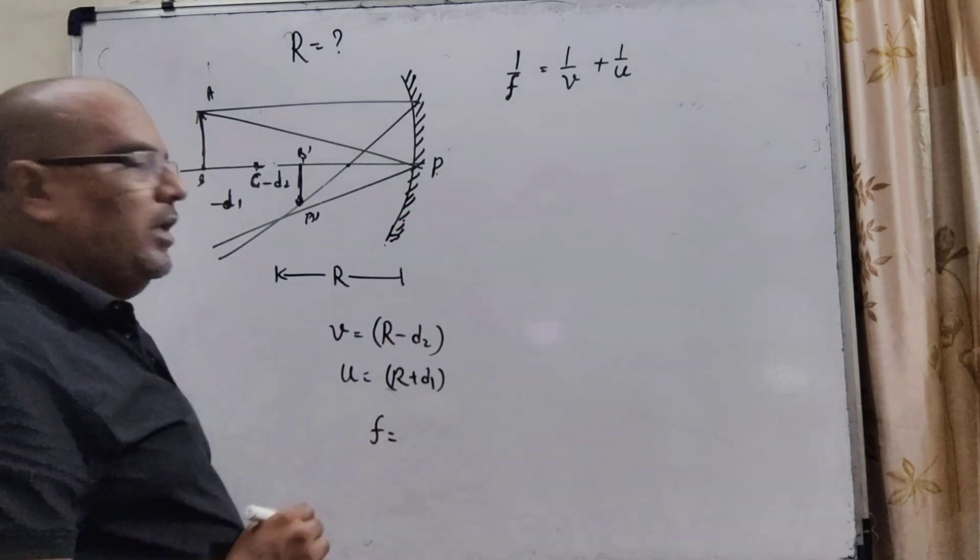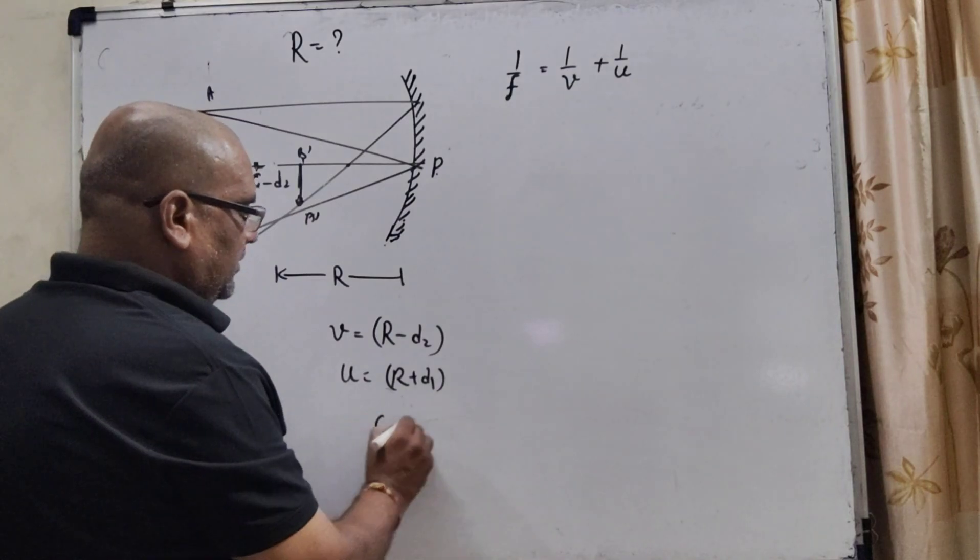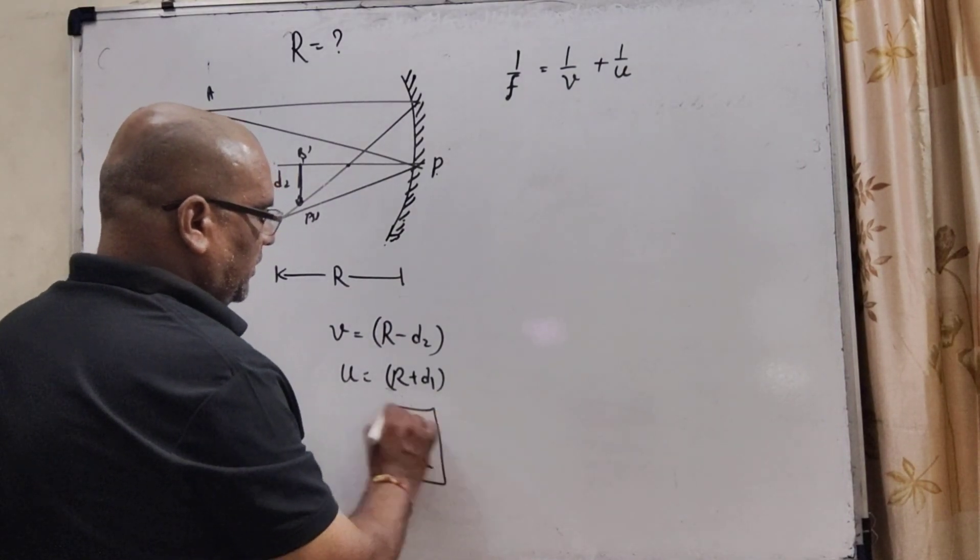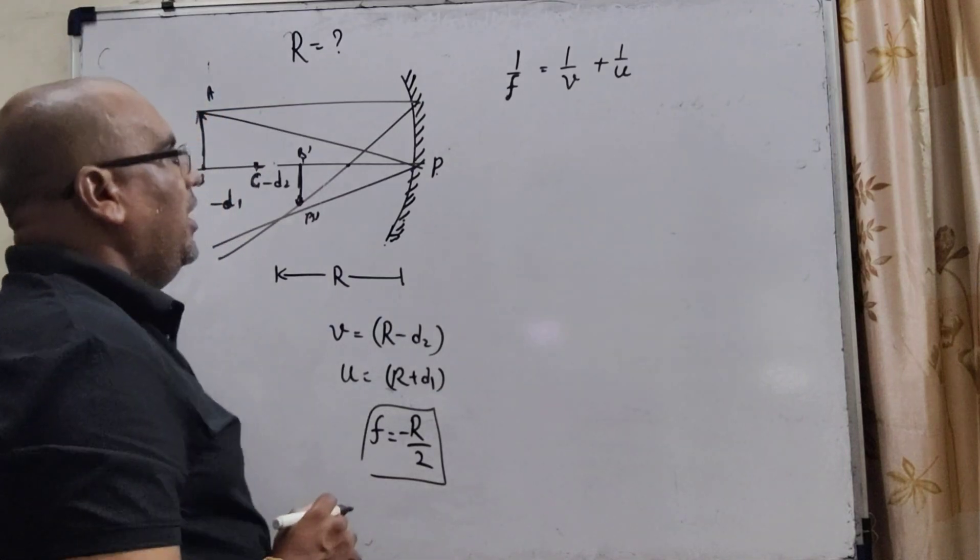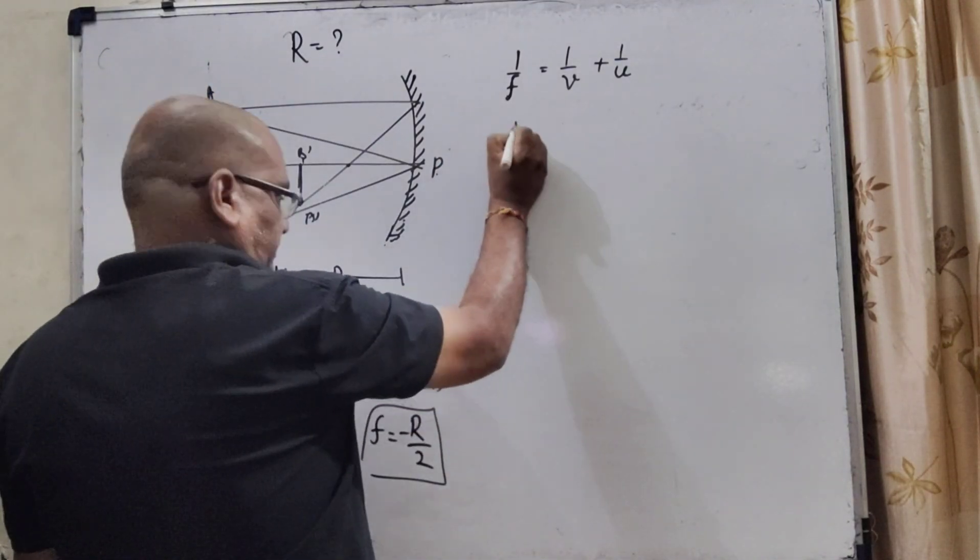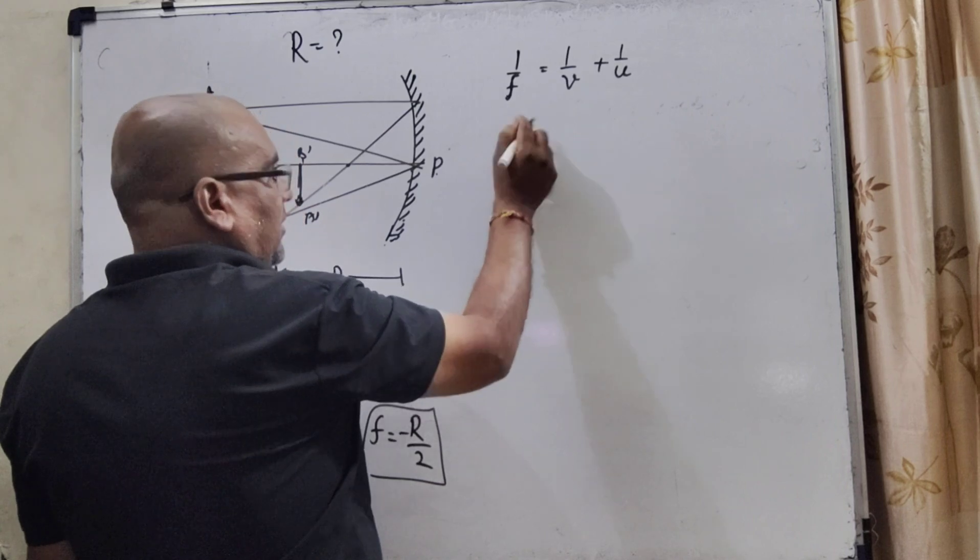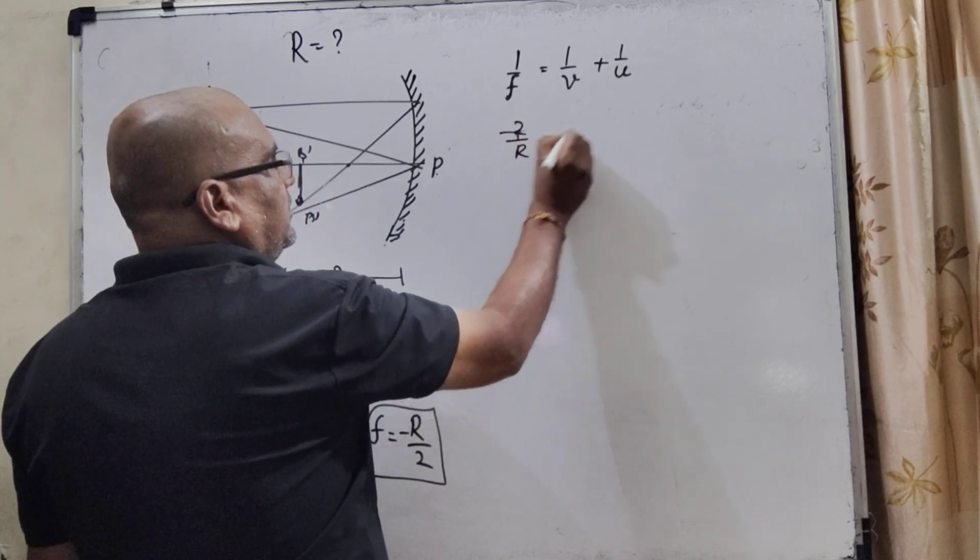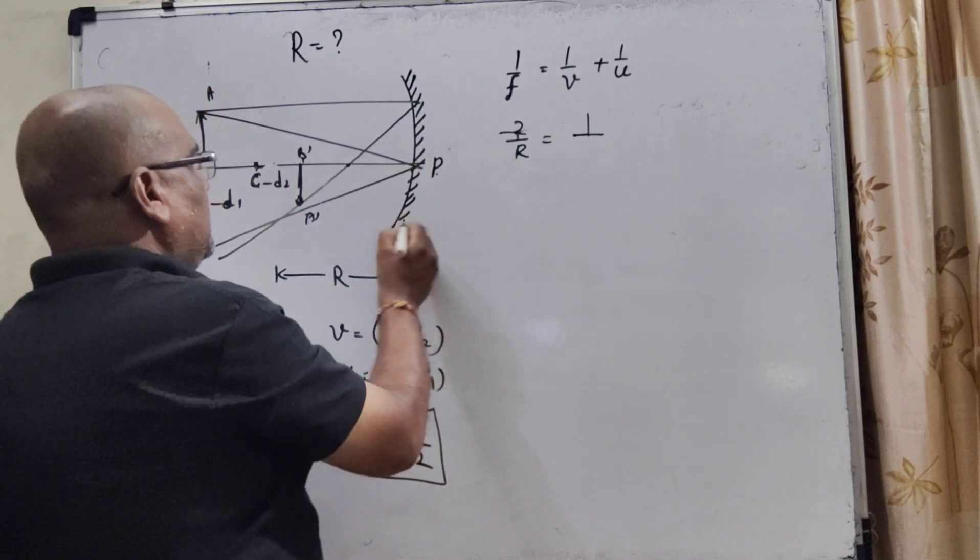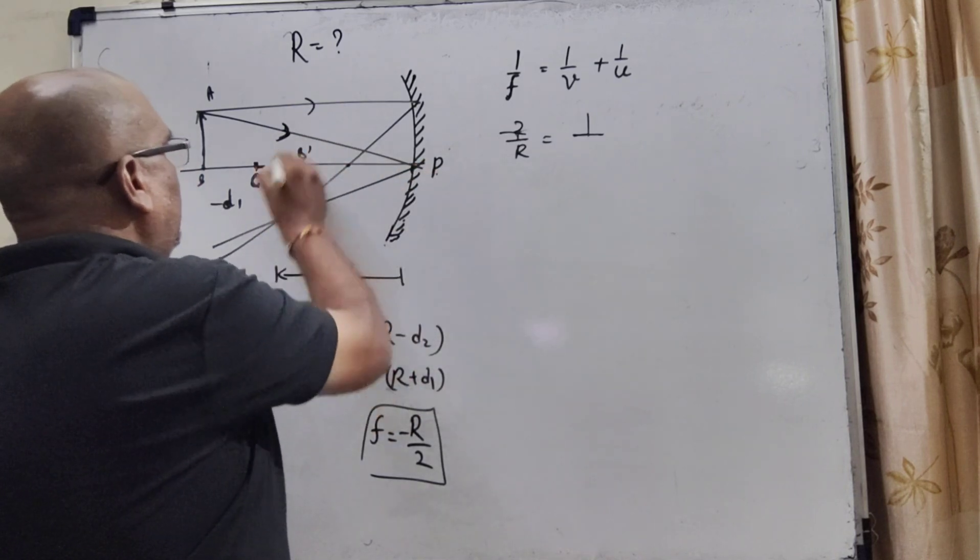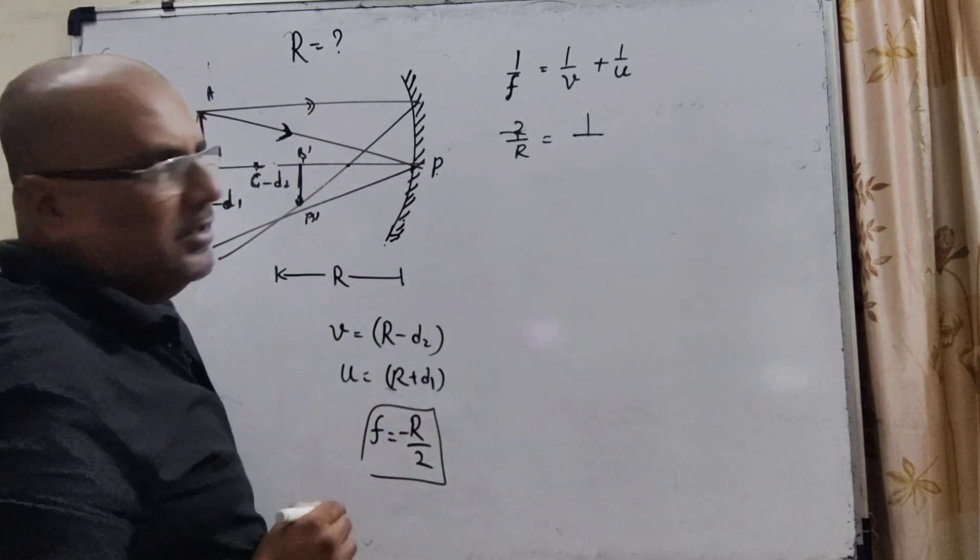So, here, we know that, minus R by 2. So, all values we have put in this formula, that becomes minus 2 by R. All distances are minus because the distance measured from the pole is in the opposite direction of the ray.